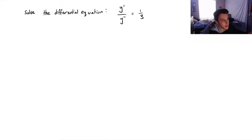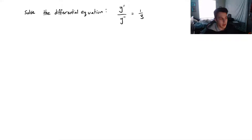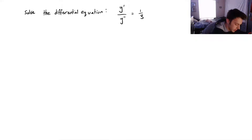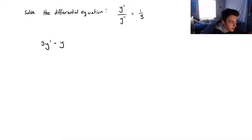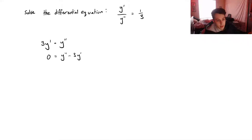We have this differential equation. It's a second order differential equation because it has y double prime, and it looks like it's also a linear differential equation since our x variable is not tacked on to any of these — we've got constants. If I multiply both sides by y double prime and also by 3, I'm left with 3y prime equals y double prime, which can be rearranged to 0 equals y double prime minus 3y prime. So we've got a linear second order differential equation.